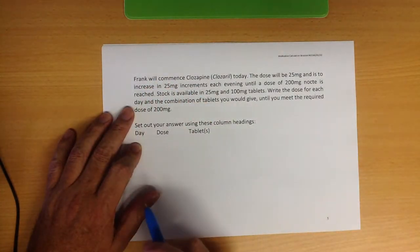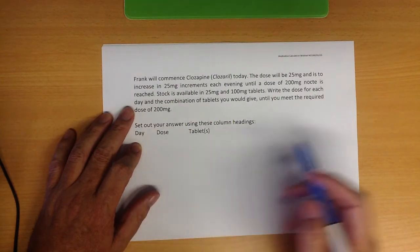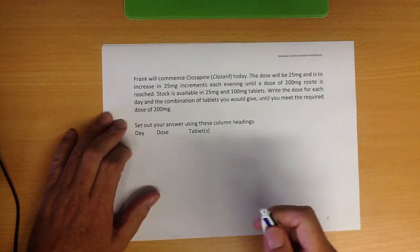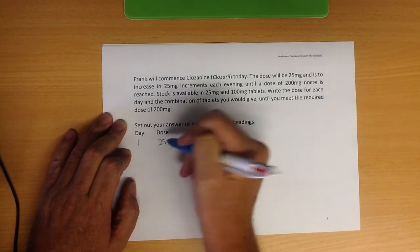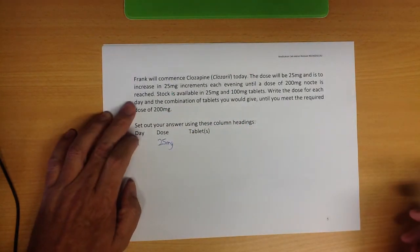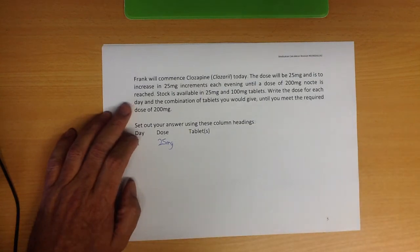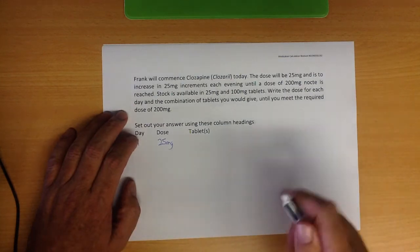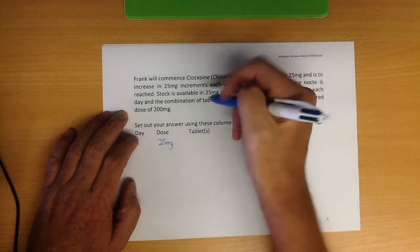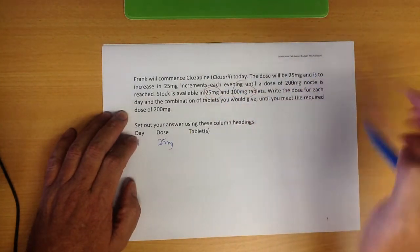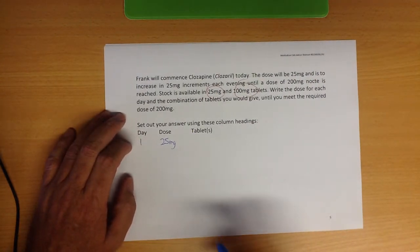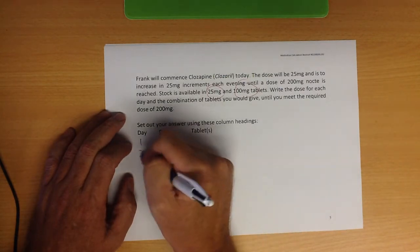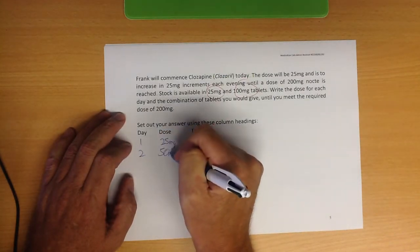Our next question is Frank will commence clozapine today. The dose will be 25 milligrams, so day one the dose will be 25 milligrams. It's to be increased in 25 milligram increments each evening until a dose of 200 milligrams nocte is reached. Stock available is 25 and 100 milligram tablets. Write a dose for each day and a combination of tablets that you would give until you meet the required dose of 200 milligrams.